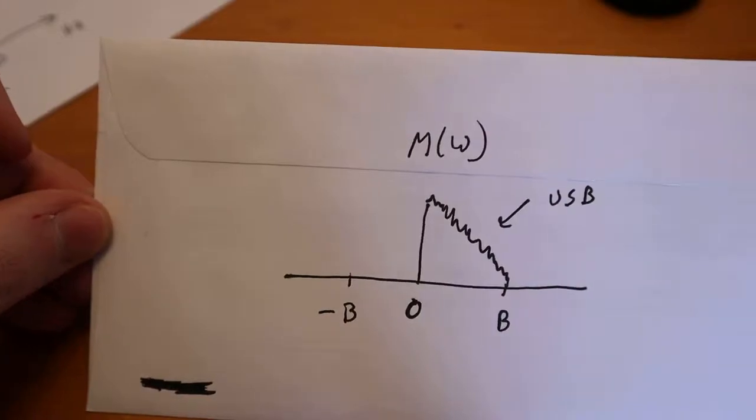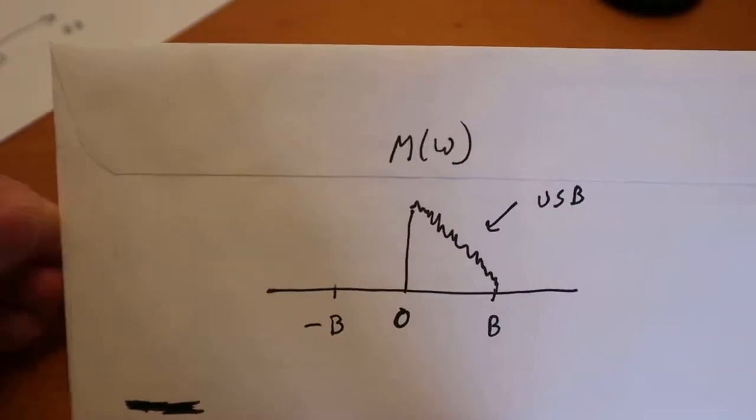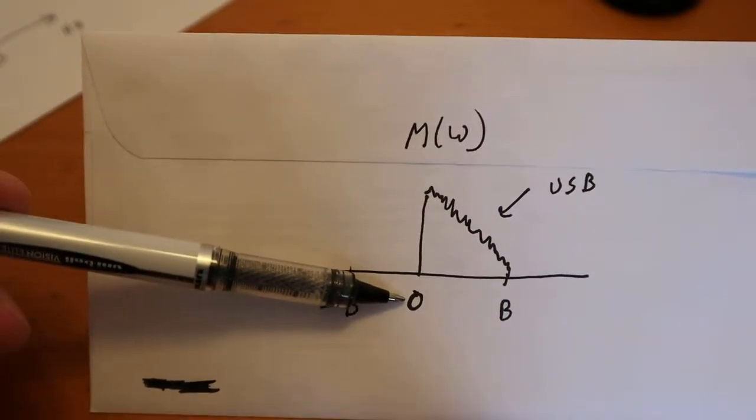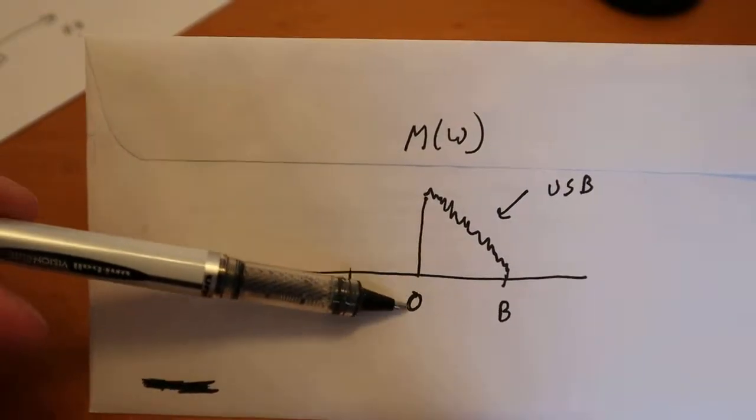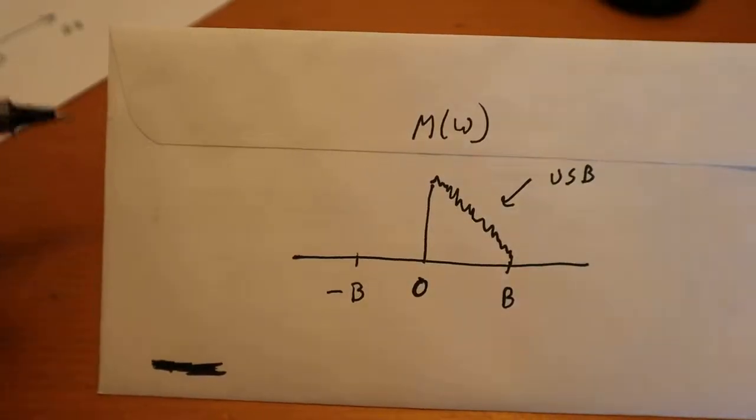So this is what we get, this is what we're left with after we take the Hilbert Transform, but he's still centered at zero. We need to somehow shift this guy up to the carrier frequency. How do we do that?